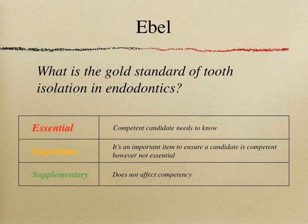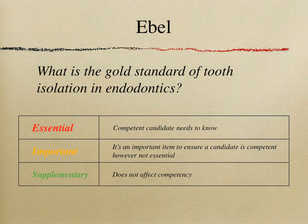Consider this example: 'What is the gold standard of tooth isolation in endodontics?' In your mind you're probably thinking rubber dam. Now as a judge, is this essential knowledge? Does a competent safe-beginner dentist need to know this? I personally would classify this as essential — but you might argue otherwise, which is why you need a panel of judges to discuss and reach a conclusion.